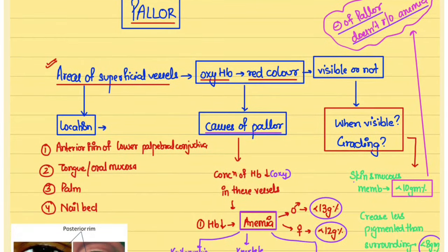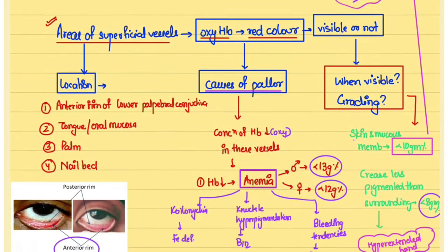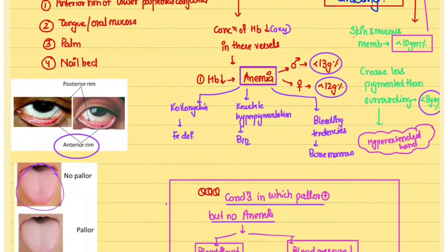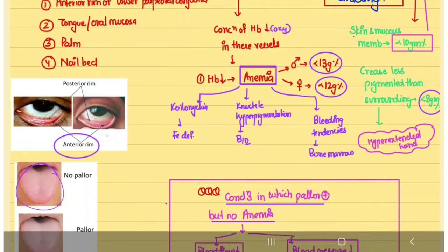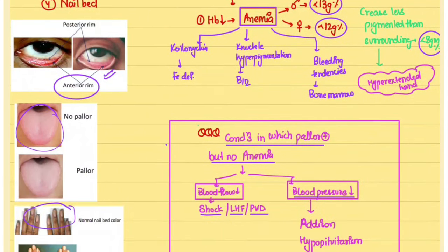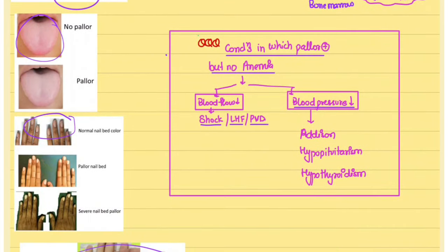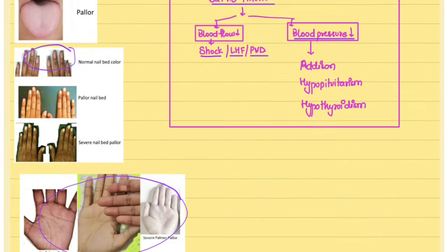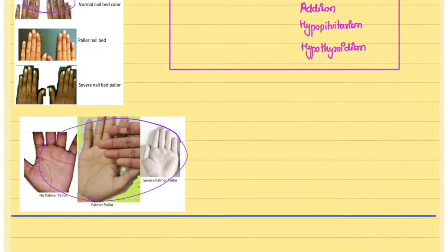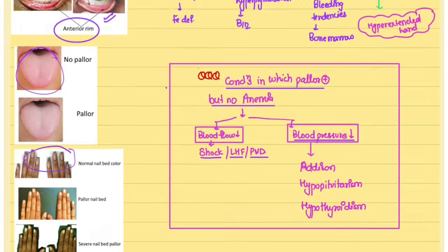To look for pallor, we examine the areas of superficial vessels: the anterior rim of the lower palpebral conjunctiva, the tongue, the nail bed, and the palm.